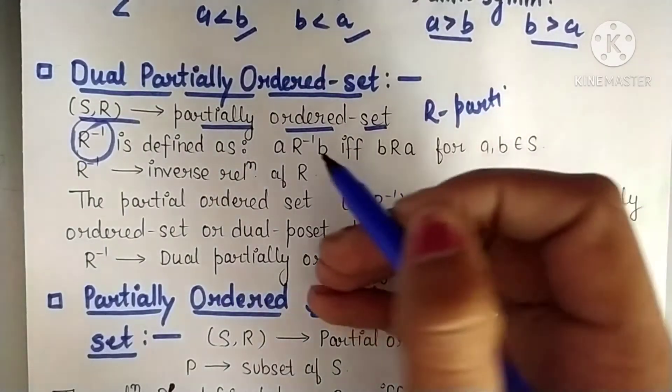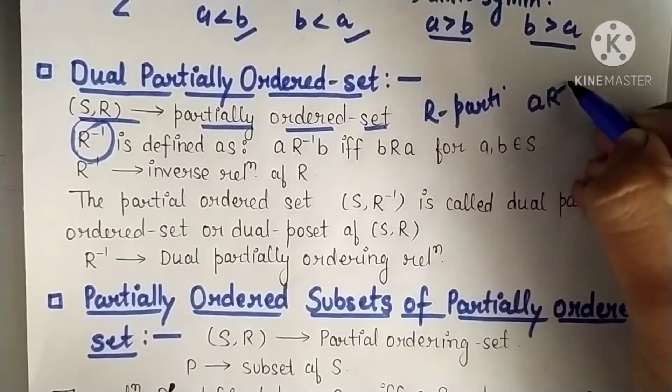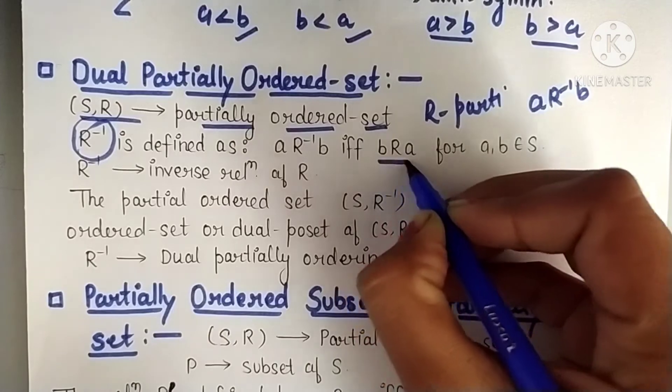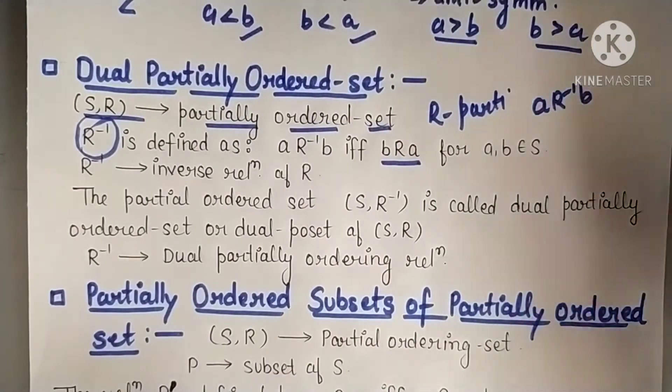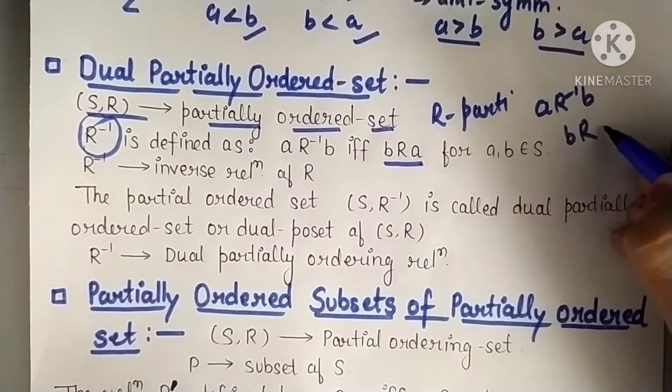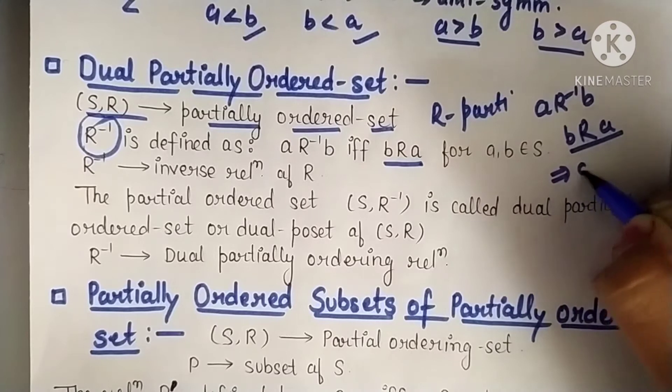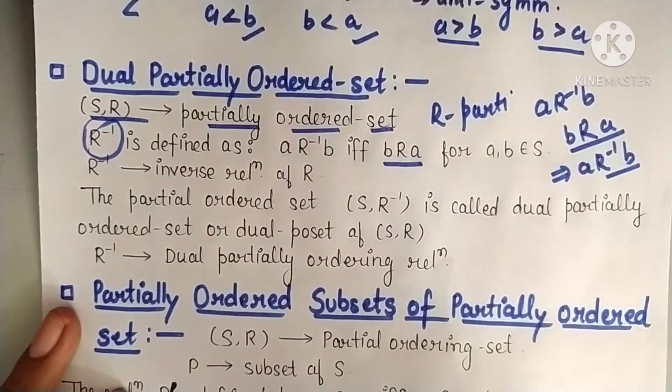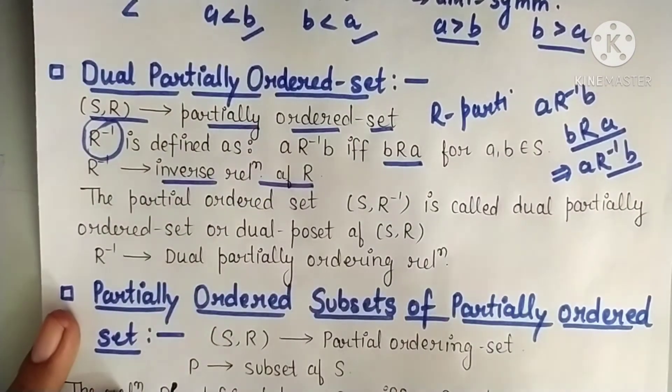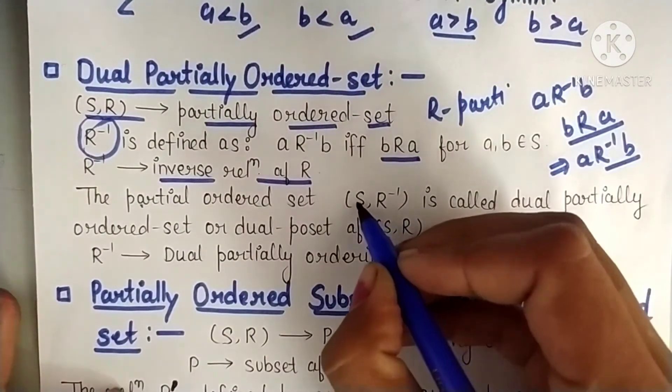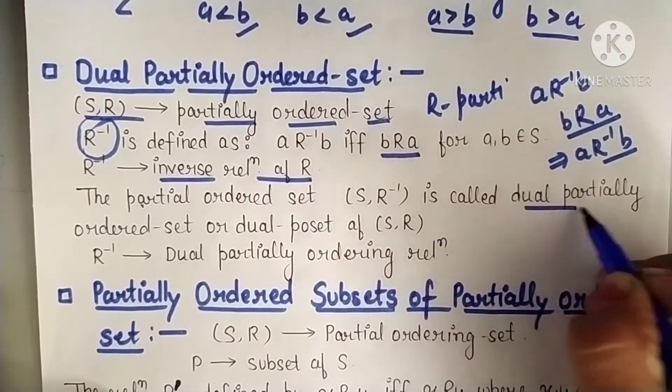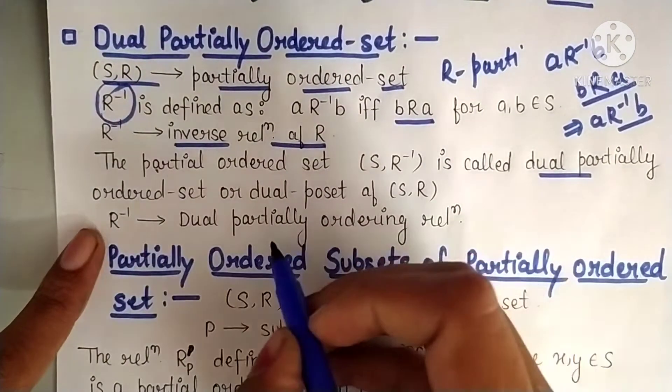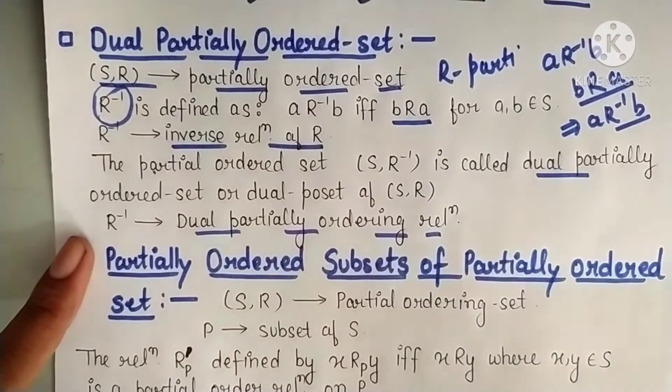If R is a partial ordering relation, then how is R inverse defined? R inverse is defined as: we say a R inverse b, means a is inversely related to b, if b related to a. Means the opposite relation. If we have to write R inverse in place of R, then b related to a. If b related to a, then we will write it as a inversely related to b. This is the definition of R inverse, which is called inverse of the relation R. If the partial ordered set is with R inverse, then we call it dual partially ordered set. And this relation R inverse is called dual partially ordering relation.